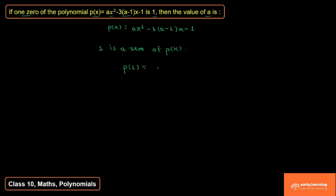So P(1) = A(1)² - 3(A-1)(1) - 1. Since 1² = 1, this becomes A - 3(A-1) - 1.